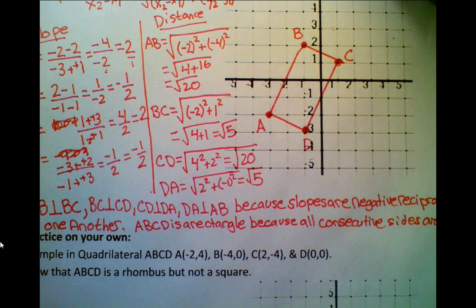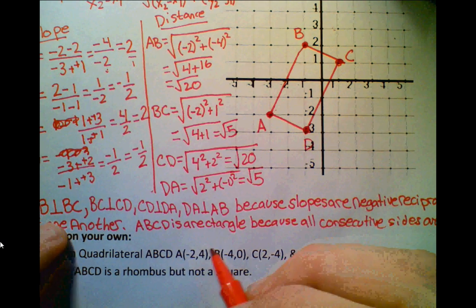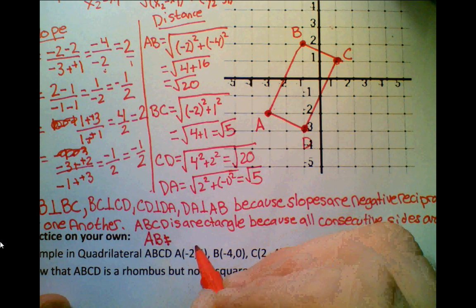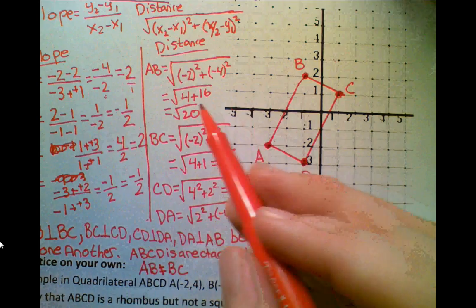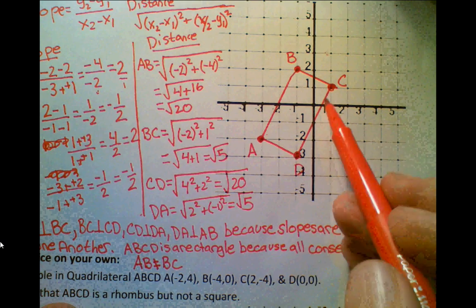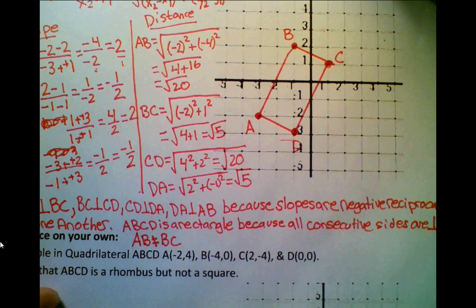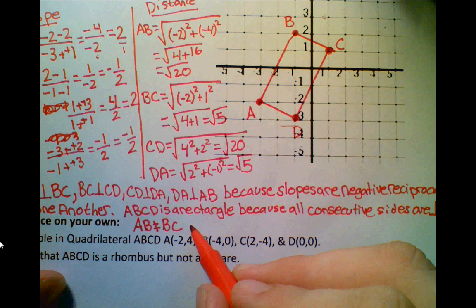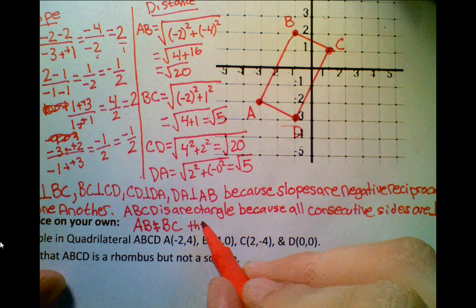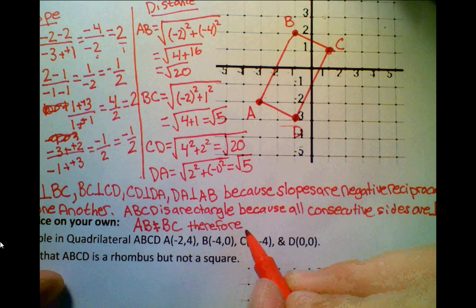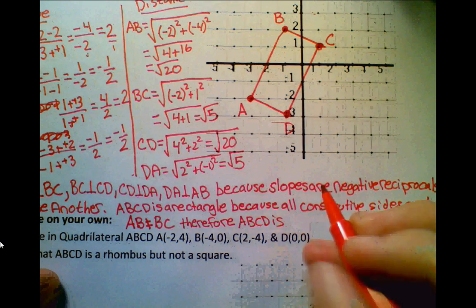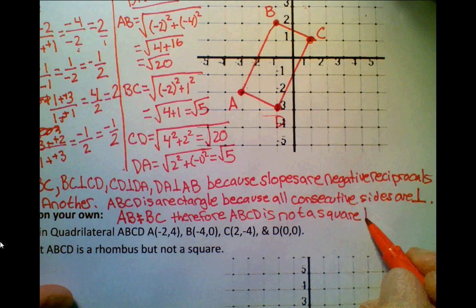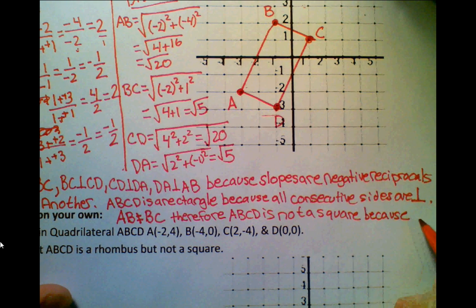So therefore, we can say that AB, the length of AB, is not equal to the length of BC. Because AB is radical 20 and BC is radical 5. We can see this in the diagram. But they want you to back it up with some good information. So all you have to say is AB is not congruent to BC. And the reason, and so therefore, ABCD is not a square because not all sides are equal.